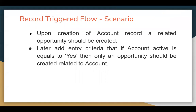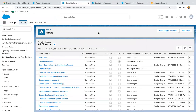After implementation of this flow, I'm going to modify the flow to add entry criteria: if account active is equals to yes — active is a field on account record — then only an opportunity should be created related to the account. So first I'm going to implement the record trigger flow without entry criteria, then I will modify it.